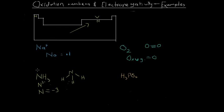Now that we've got nitrogen with minus three, we know that the sum of the three hydrogens' oxidation numbers is going to equal plus three. Because they're all bonded to the same nitrogen, they're all in the same situation and will have the same oxidation number. The maximum oxidation number of hydrogen is one since it's in group one, so the oxidation number of each hydrogen atom is going to be plus one.